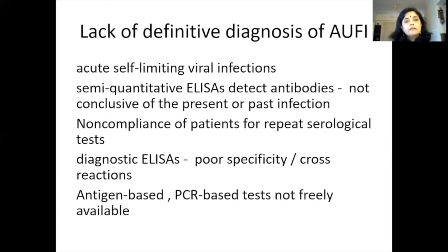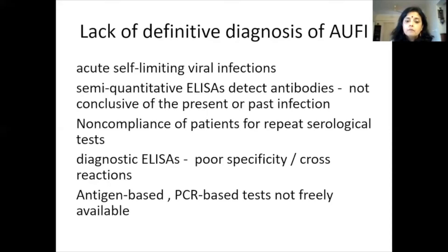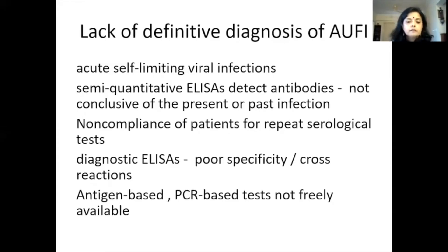There is often a lack of definitive diagnosis of acute undifferentiated febrile illnesses. The illness may be self-limiting — viral infections may resolve before the patient is fully investigated. Semi-quantitative ELISAs may not be conclusive of present or past infection. Patients may not comply with repeat serological tests, even when a second or third sample is needed to confirm. Diagnostic ELISAs can have poor specificity and cross-reactions. Antigen-based and PCR-based tests may not be freely available. All this leads to many cases remaining unknown.